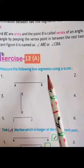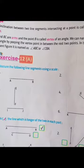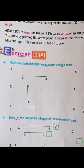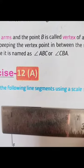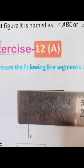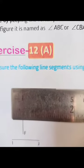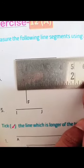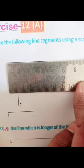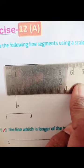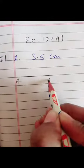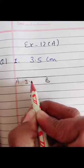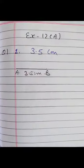Exercise 12A, question number one: measure the following line segments using a scale. Take a scale and a pencil and measure using the scale. After measuring, we find this line segment is 3.5 centimeters, so write 3.5 centimeters here.